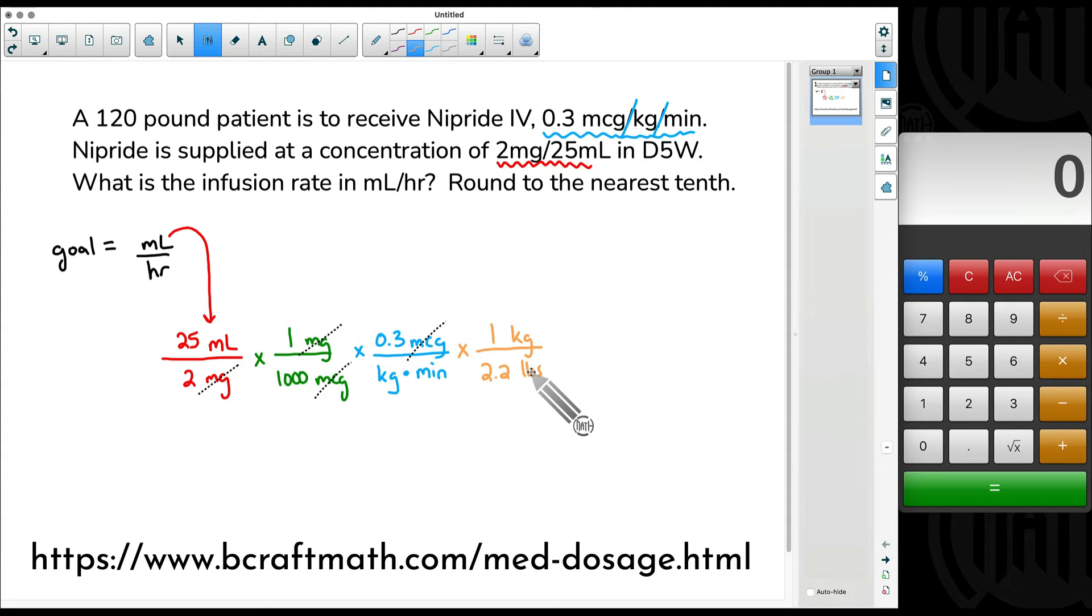I'm not doing any calculations outside of my dimensional analysis. I'm just writing down conversions. We're going to calculate everything once we meet our goal. So what have we accomplished here? We can get rid of our kilograms.